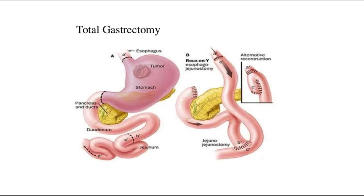After total gastrectomy, the whole stomach is removed, so the oesophagus will be anastomosed to the proximal part of the jejunum. At the lower end, there is a jejunojejunostomy done. You can refer to the ABCD labelled parts for easier understanding. This is Roux-en-Y oesophagojejunostomy.